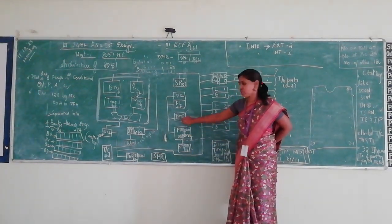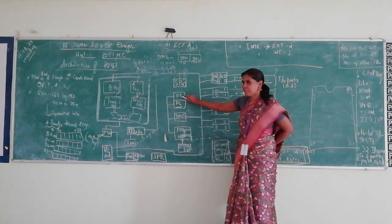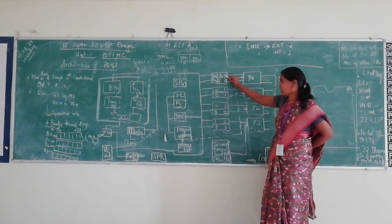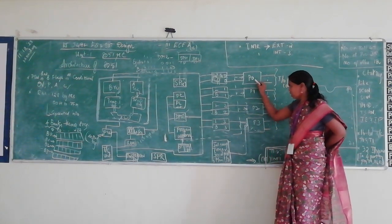You have a program address. Here you just got data pointer. You have a program counter, stack pointer. You have a latch, buffer. You have 4 ports: port 0, port 1, port 2, port 3.